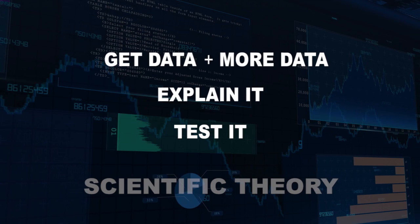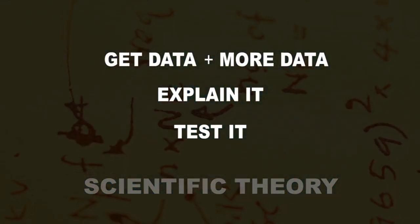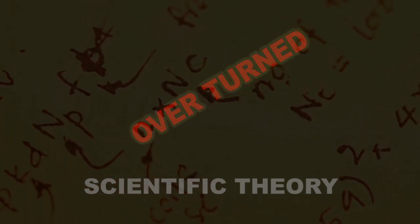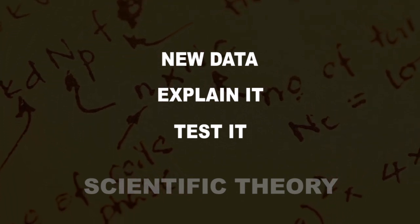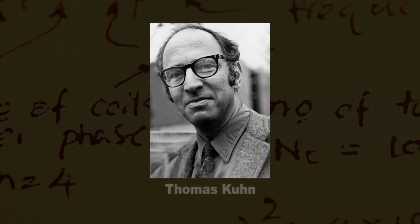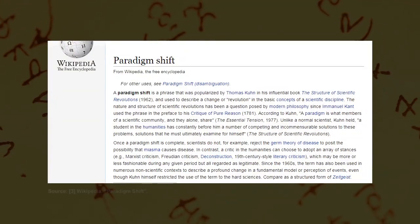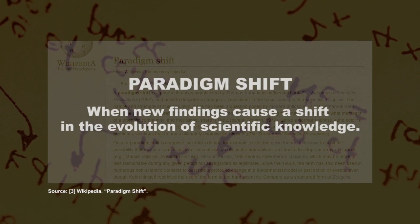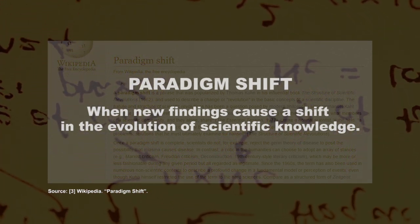As more data is accumulated, these theories will be refined and the explanations will become more nuanced. Or in some cases, a theory will be overturned almost completely and be replaced with another theory that has higher explanatory power. The latter doesn't happen very often. They're what physicist and philosopher of science Thomas Kuhn called paradigm shifts, in which new approaches for looking at a particular field or question are developed due to new findings that cause a considerable shift or evolution in scientific knowledge.